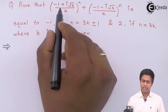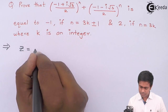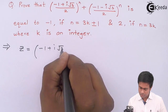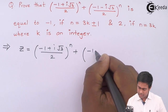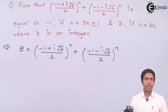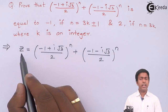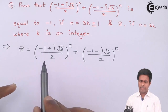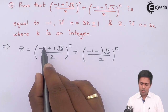Let me assume the given expression is Z, so Z = [(-1 + i√3)/2]^n + [(-1 - i√3)/2]^n. We'll find Z and prove that Z = -1 and Z = 2 under the respective conditions.